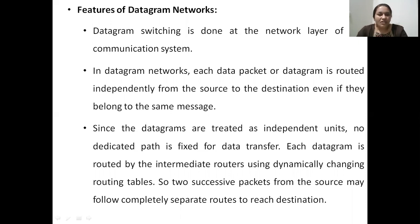In a datagram network, each datagram will be routed by intermediate routers using their dynamically changing routing table. The routing table is a data structure which contains information about the next available communication path connected to that particular node. This changes dynamically depending on network load or network traffic on those communication channels. When a node receives a datagram, it checks its routing table and whichever route is free, as indicated dynamically in the routing table, that particular route will be taken by the packet and sent to the next level. So two consecutive packets from the source may follow completely separate routes to reach the destination.